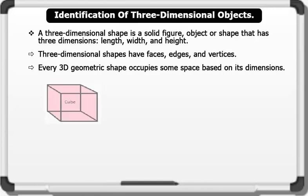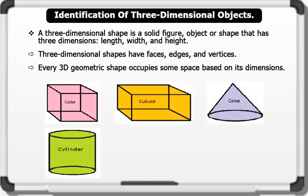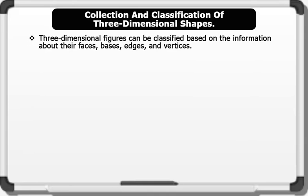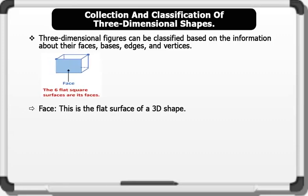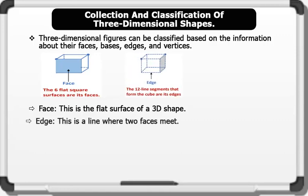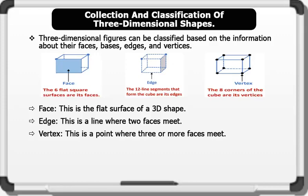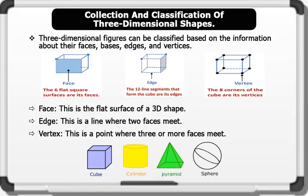Some examples of 3D shapes include cube, cuboid, cone, cylinder, sphere, pyramid, etc. That's brilliant. Collection and classification of three-dimensional shapes: Three-dimensional figures can be classified based on the information about their faces, bases, edges, and vertices. One, face: this is the flat surface of a 3D shape. Two, edge: this is a line where two faces meet. Three, vertex: this is a point where three or more faces meet. They can also be grouped according to their shapes. That's brilliant.